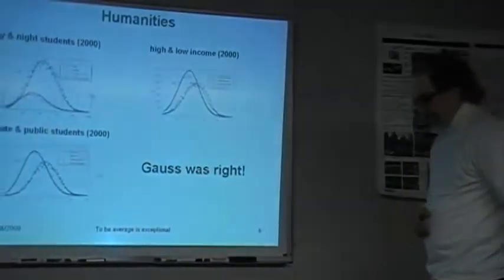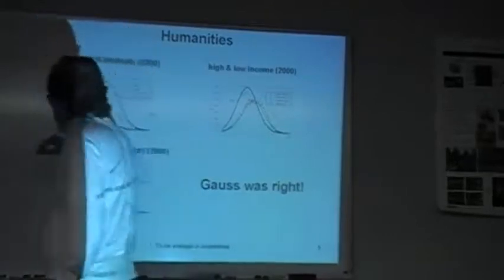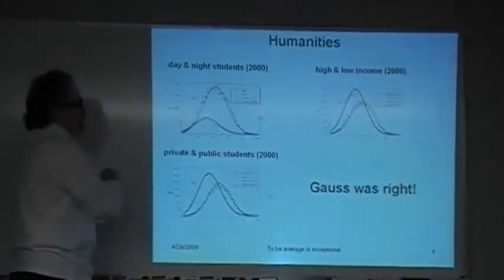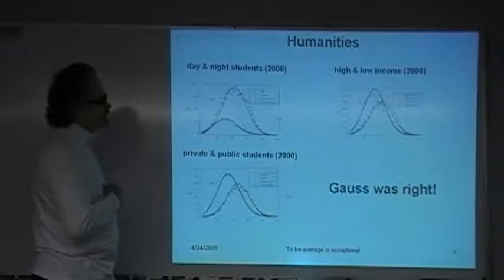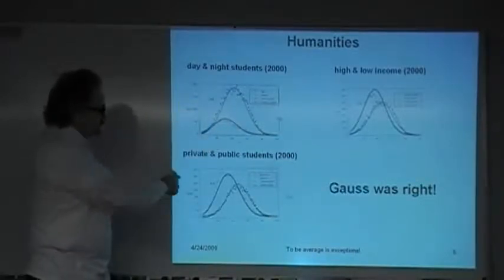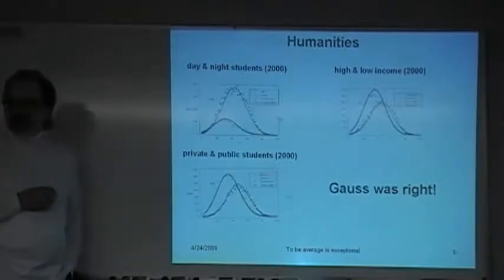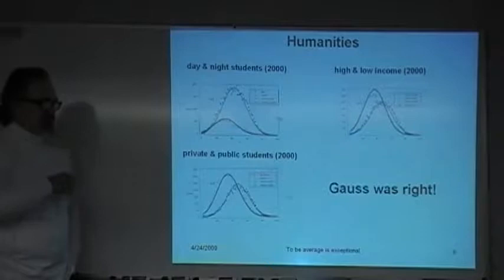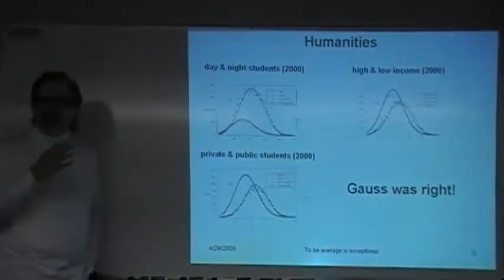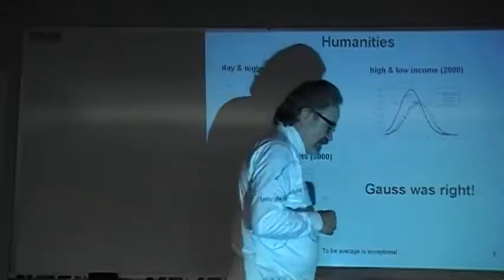Alright, this is the humanities. And this compares students that went to day school and night school. And it looks pretty Gaussian. For high and low incomes, looks pretty Gaussian. For private and public students, still looks pretty Gaussian. So, it looks like Gauss was right. You have this nice normal curve. You know, statistical error, but this is a nice normal curve for the distribution of grades. That's fine, but this is the humanities.